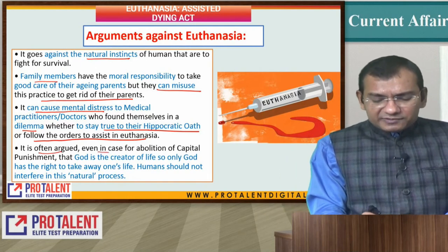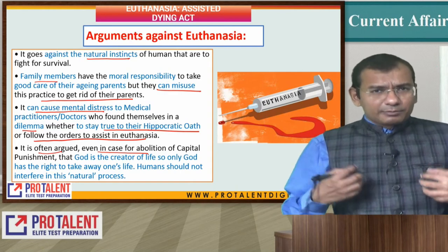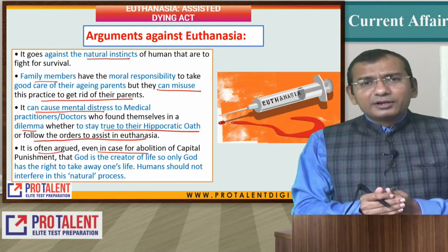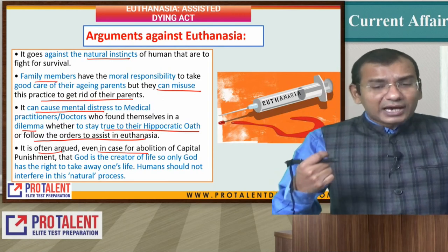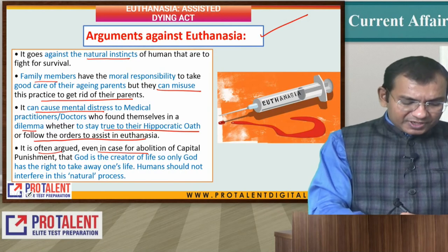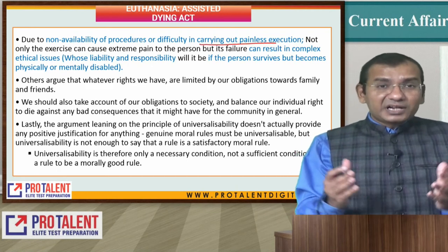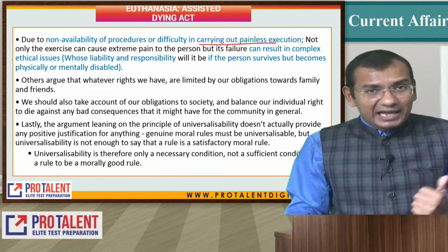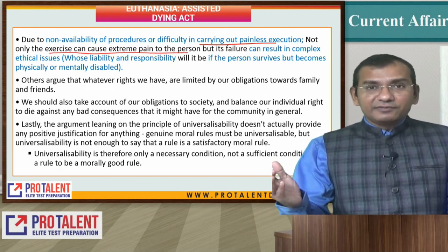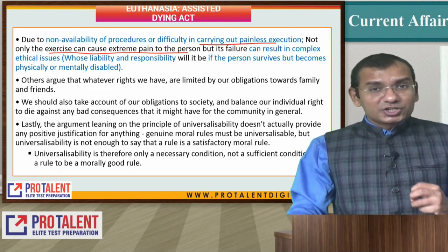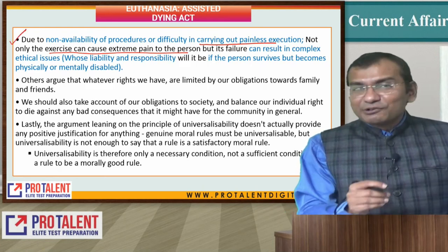It is often argued, even in the case of abolition of capital punishment, that God is the creator and we cannot take away life — only God has the authority to take away life. Humans should not have the right to take away the life of other people. Due to the non-availability of procedure or difficulty of carrying out painless execution, we also cannot go for euthanasia everywhere. Not only can the exercise cause extreme pain to the person, but if it fails, we have a complex scenario — not just medically complex, but ethically and morally complex.